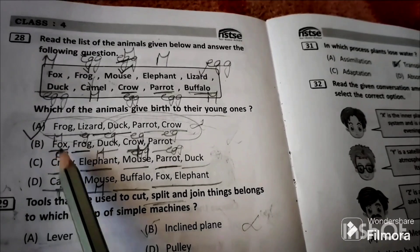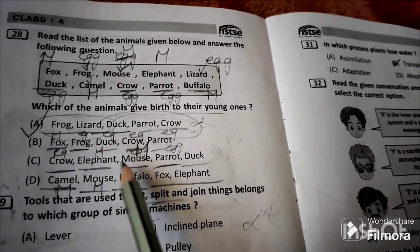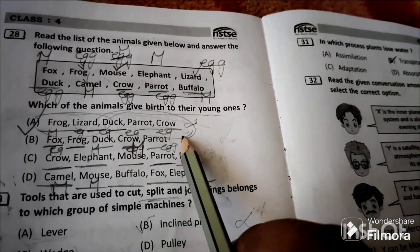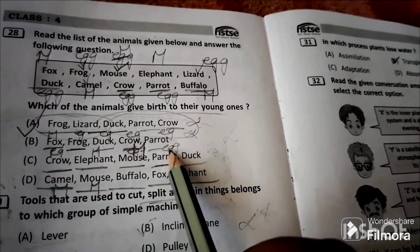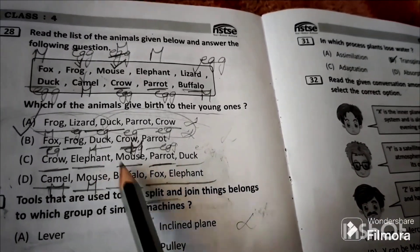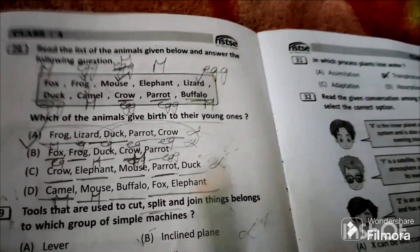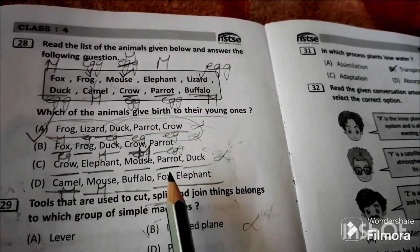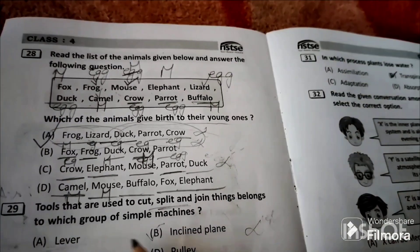Fox only is mammal, rest of frog is egg laying and duck is egg laying animal, crow is egg laying and parrot is egg laying. Elephant and mouse are mammals. In option D: camel, mouse, buffalo, fox, elephant, all are mammals which give birth to young ones. So answer is option D.